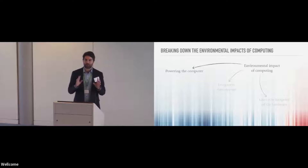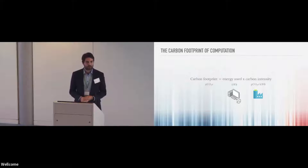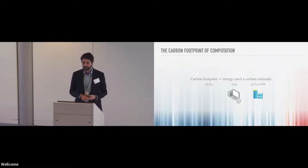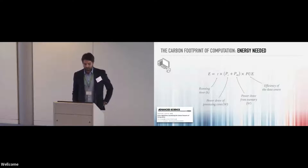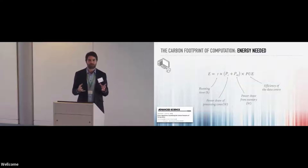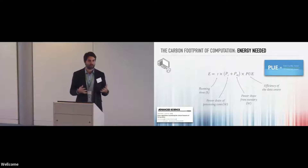Then we get to powering the computer, which is looking at electricity usage during a task — something interesting to individual scientists, because that's the user side. That's actually not very hard to estimate. You just need to know how much energy is used, which depends on the software and the hardware, and then what's the carbon footprint of producing that electricity — that's called carbon intensity, which mostly depends on where you are in the world, because most data centers are plugged into the local power grid. It depends on how long the model runs, how much power is being drawn, the processing cores and memory, and the efficiency of the data center.